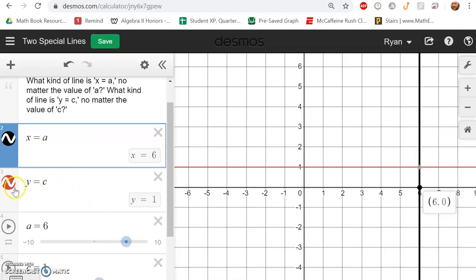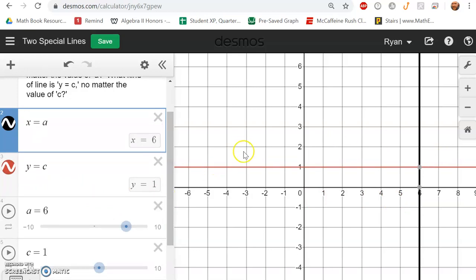And every equation of the form y equals some number is what we call a horizontal line. The same kind of idea holds here.